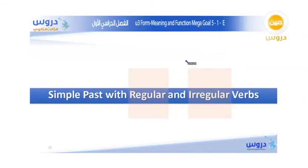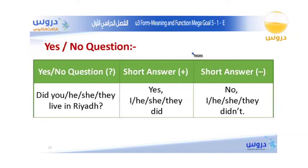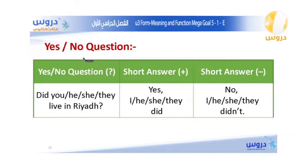Now we move to simple past with regular and irregular verbs. Regular verbs follow a certain pattern in the past — like adding -ed. Irregular verbs do not follow a set pattern; each verb has its own past form. Here we have examples of how to make yes or no questions in the simple past.